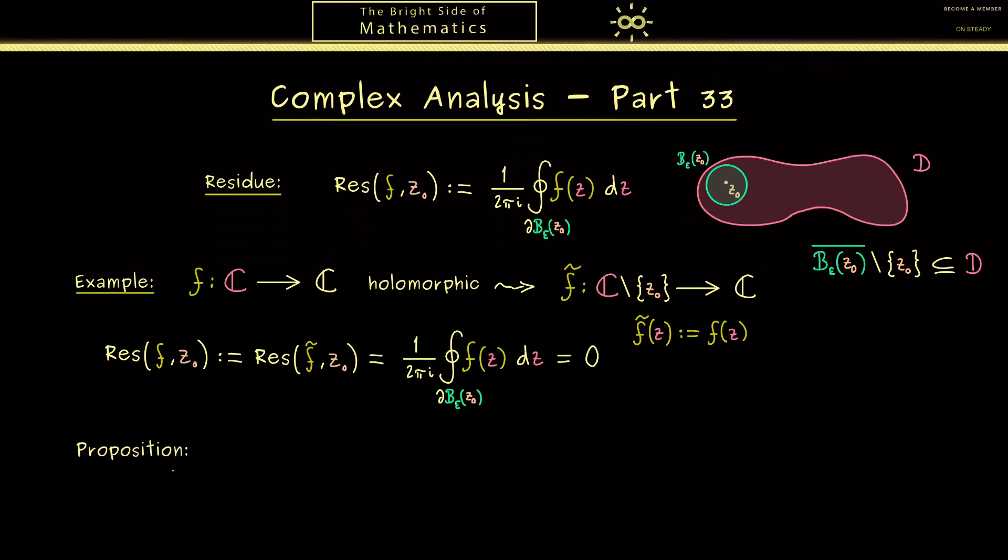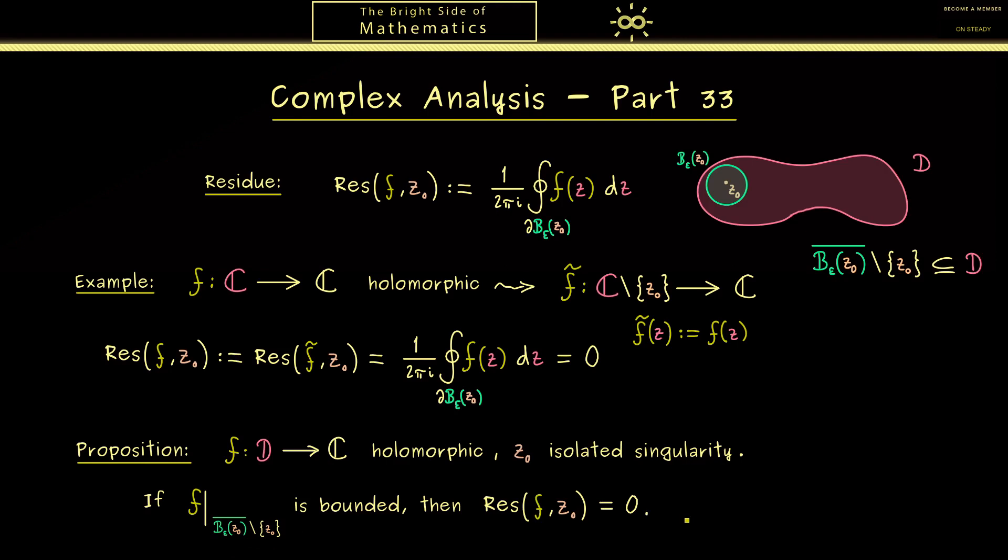Moreover, this property that the residue vanishes we can make even more general. Roughly speaking, you can remember if the values of the function don't explode around the isolated singularity, the residue has to be 0. So let's formulate this in a precise way. As always we need a holomorphic function f and an isolated singularity z0. Then we look at the function only in this small disk around z0, so we can write this as f restricted to this dotted disk. And now if this restriction is bounded, then the residue at z0 vanishes. So you should immediately see this generalizes the example from above.